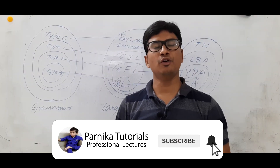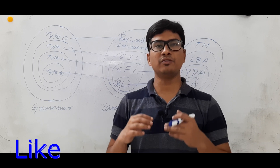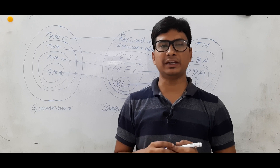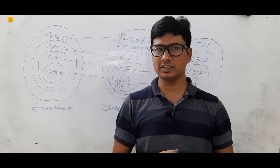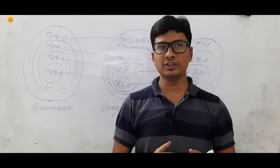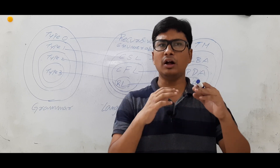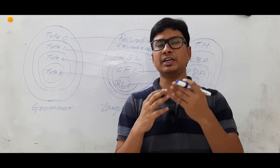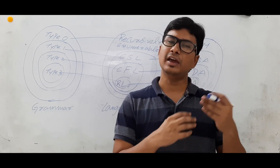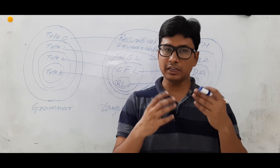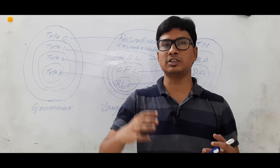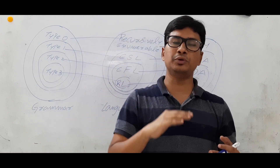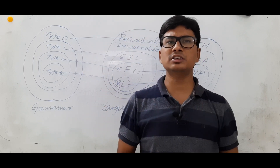Good morning friends, I hope everyone is doing well. I request everyone to watch my videos in a sequence for better understanding. Till now we have discussed what is a grammar, what is a language, and what is a mathematical model. We have constructed finite automata — DFA, NFA, and epsilon-NFA. In the last video we discussed Chomsky classification: type 0, type 1, type 2, and type 3 grammar.